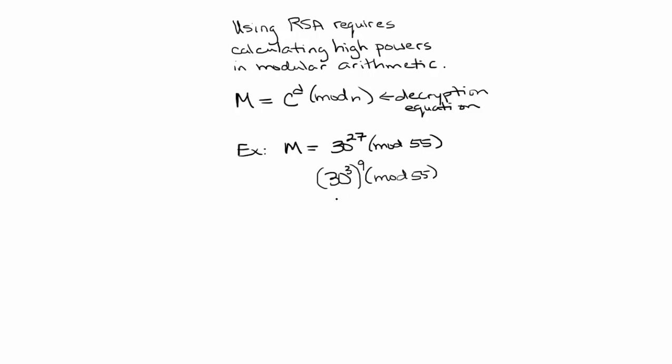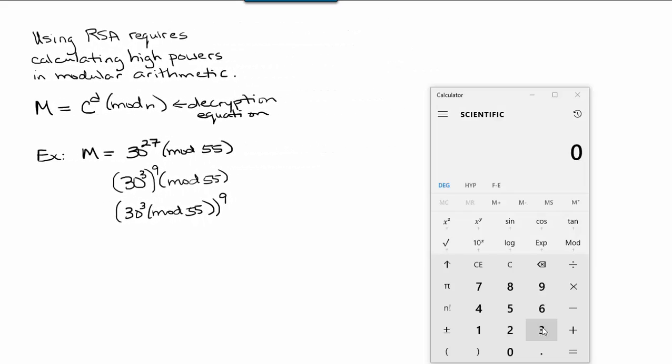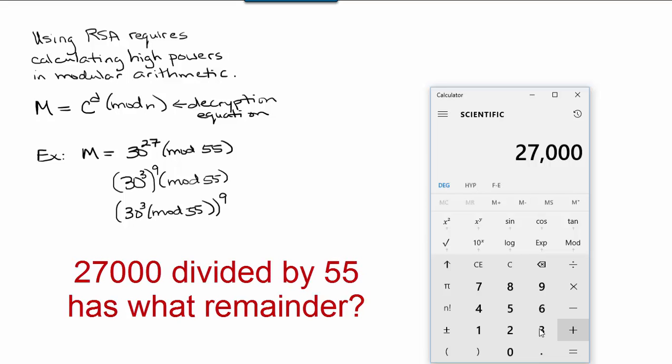And the reason that this is helpful is that we know that we can just find 30 to the 3rd mod 55 and multiply whatever that number is times itself 9 times. 30 to the 3rd can be found on a calculator. 30 raised to the 3rd power is 27,000. Now, if we want to know what that's equal to mod 55...